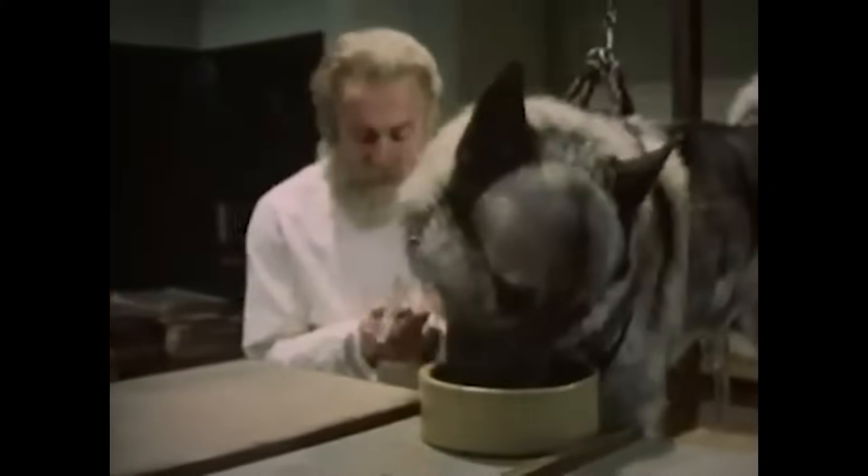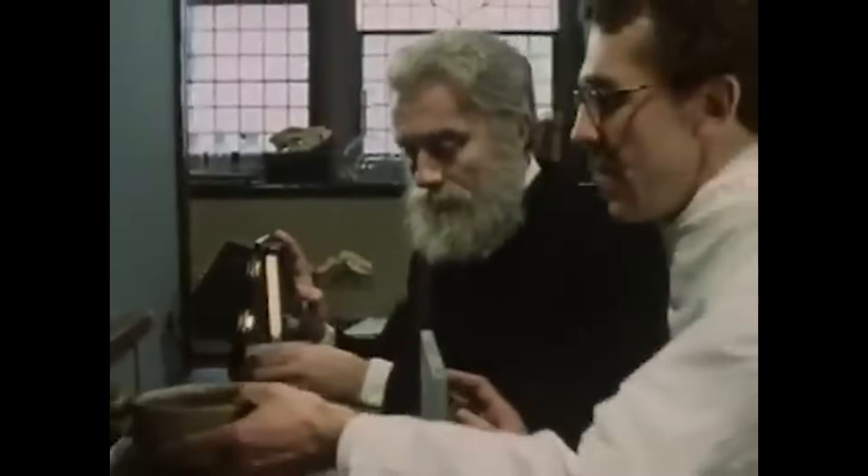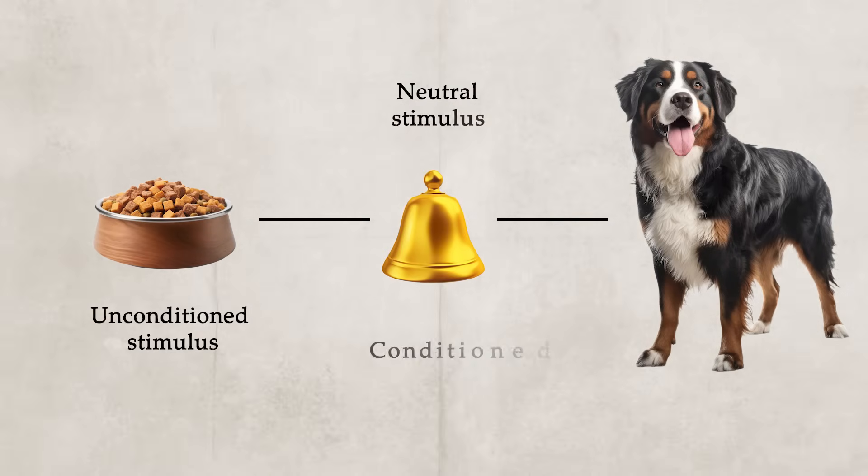Pavlov wanted to see if he could condition a dog to associate food with a neutral stimulus. For his experiment, he chose the sound of a bell, which on its own really meant nothing to the dog. During the process of acquisition, Pavlov would ring the bell every time he was about to give the dog food. Eventually, after repeating this process many times, the dog started to associate the bell with the arrival of food, changing the bell from a neutral stimulus to a conditioned stimulus.